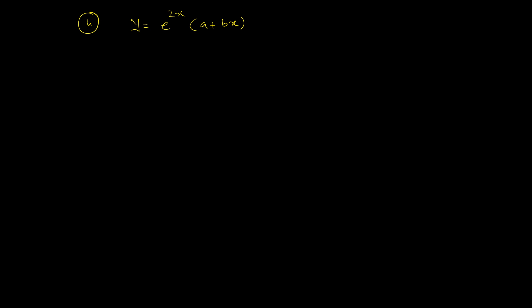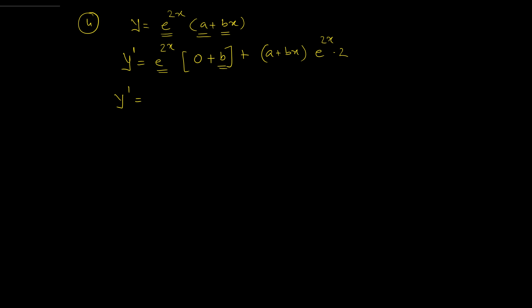Question 4: y = e^(2x)·(a + bx). Here a and b are two arbitrary constants, so we differentiate twice. First derivative using product rule: y' = e^(2x)·(0 + b) + (a + bx)·e^(2x)·2 = b·e^(2x) + 2(a + bx)·e^(2x). Recognizing that (a + bx)·e^(2x) = y, we get y' = b·e^(2x) + 2y.